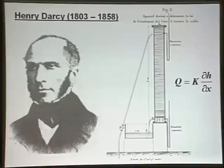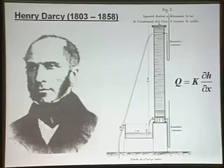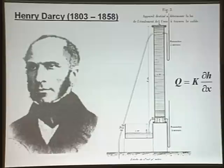Most people would be aware that the origins of quantitative hydrogeology are usually traced back to Henry Darcy, who observed a linear relationship between the flow of water through a sand column and the difference in pressure between the upstream and downstream ends of that column. What most people don't realise is that Darcy actually never named this constant of proportionality — he wasn't particularly interested in it, he just observed a linear relationship. And yet this constant, the hydraulic conductivity, has become the focus of a lot of what we do in hydrogeology and still is today.